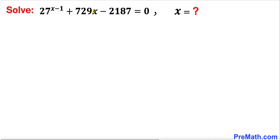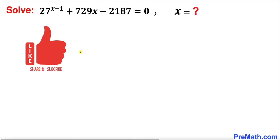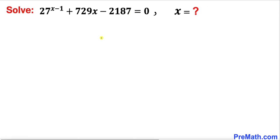Welcome to pre-math. In this video we are going to solve this given exponential equation: 27 to the power x minus 1, plus 729x minus 2187 equals zero. Please don't forget to give a thumbs up and subscribe. Let's get started with the solution.